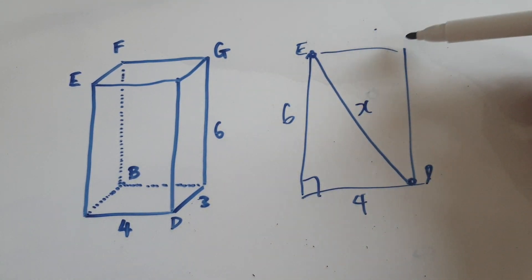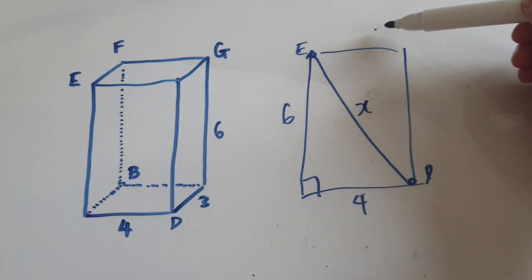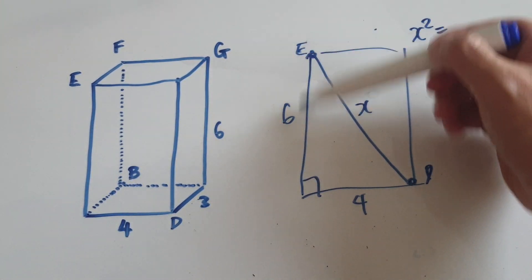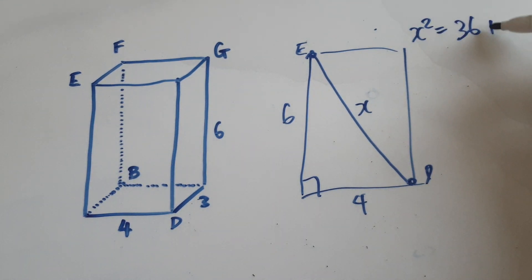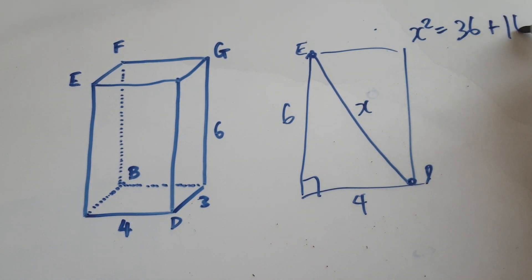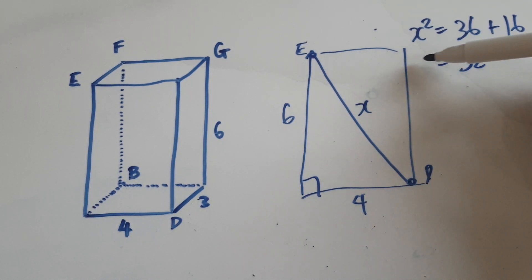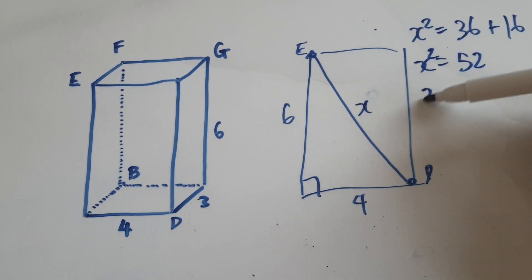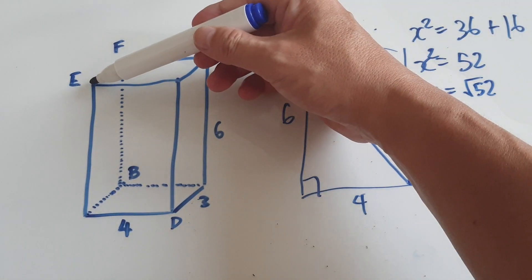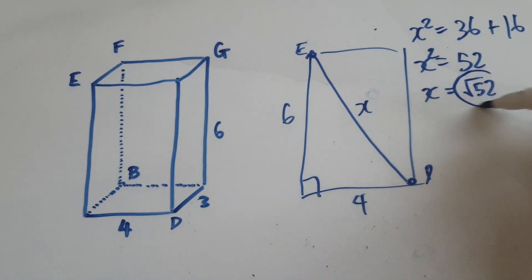x squared equals 6 times 6 which is 36, plus 4 times 4 which is 16. Add the two together, that would be 52. So x equals root 52. So ED is given by root 52.